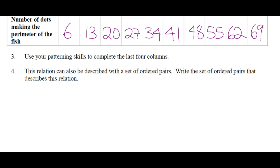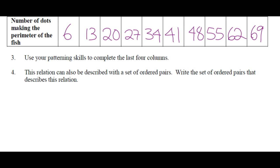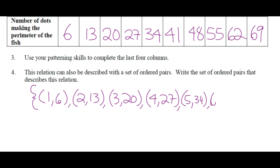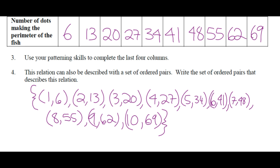This relation could be described with a set of ordered pairs, right? The set of ordered pairs that describes this relation. It's a set, so we use set notation. You use the brace bracket. And then the ordered pairs, right? Growth stage one, 6; 2, 13; 3, 20; 4, 27; 5, 34; 6, 41; 7, 48; and it's not going to fit on one line—8, 55; 9, 62; and 10, 69.